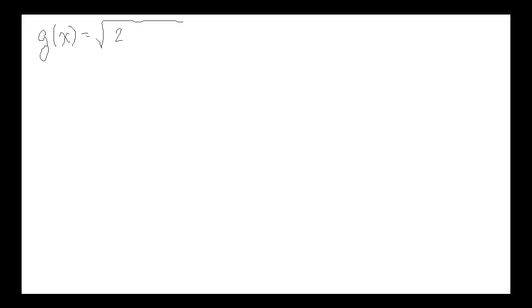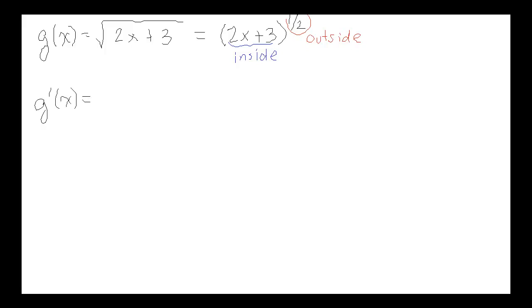Let's try another one. This time: g(x) = √(2x + 3). Just as when we had a square root of x, we couldn't do anything until we converted it to an exponent. I don't have a specific rule for square roots, but I do have a rule for powers. So this is (2x + 3) to the one-half power. Again, I have an inside function and an outside function. We take the derivative of the outside function first: bring the one-half down. I haven't finished with the outside function yet, so the inside function is left as is. Then subtract one from the exponent: one-half minus one is negative one-half.